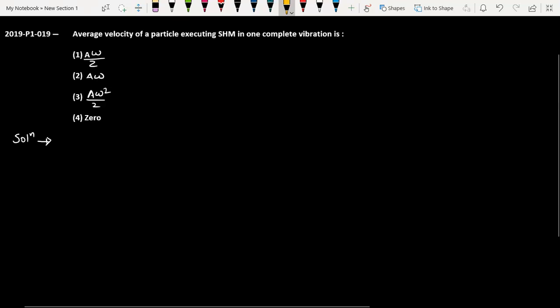This question is from NEET 2019 paper, code P1, question number 19. The question is: average velocity of a particle executing simple harmonic motion in one complete vibration is? We have four options: (1) A omega by 2, (2) A omega, (3) A omega squared by 2, and (4) zero.